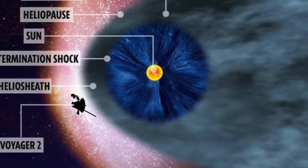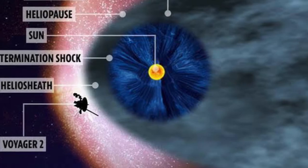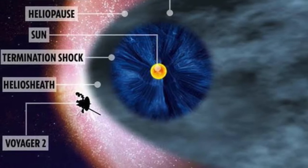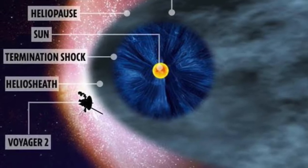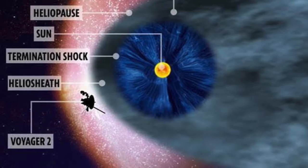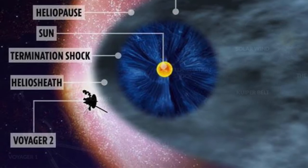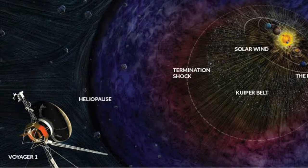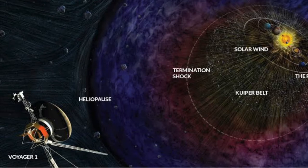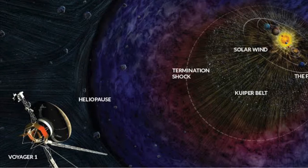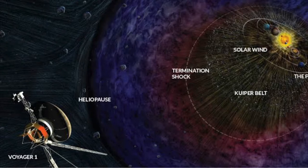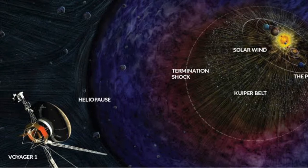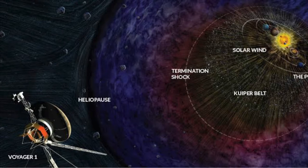The Sun creates this heliosphere by sending a constant flow of particles and a magnetic field out into space. The speed of this constant flow of particles and magnetic field out into space is around 670,000 miles per hour. This stream is called the solar wind.